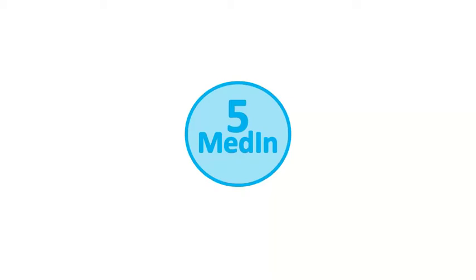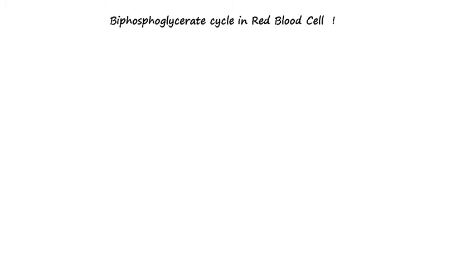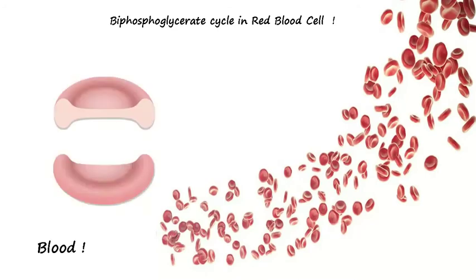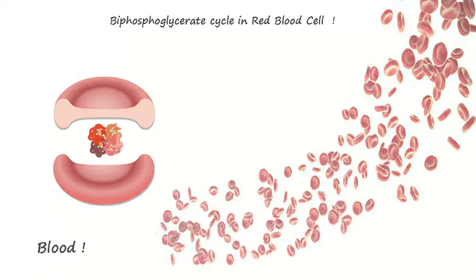Welcome to Med in Five channel. This video will explain the bisphosphoglycerate cycle in red blood cells. Human blood has red blood cells inside which carry oxygen. The oxygen is bound at the hemoglobin. Let's focus on the hemoglobin.